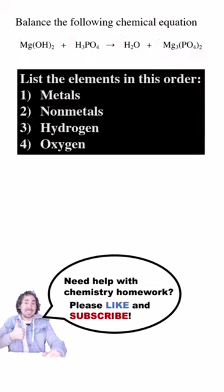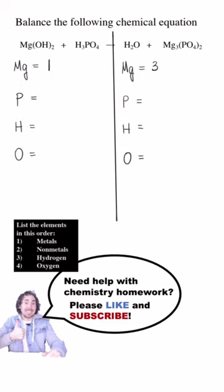To balance, I first count the atoms on each side following a specific order. There's one magnesium on this side and three on this side. There's one phosphorus on this side and two on this side. The two here on the outside multiplies everything inside the parentheses by two.